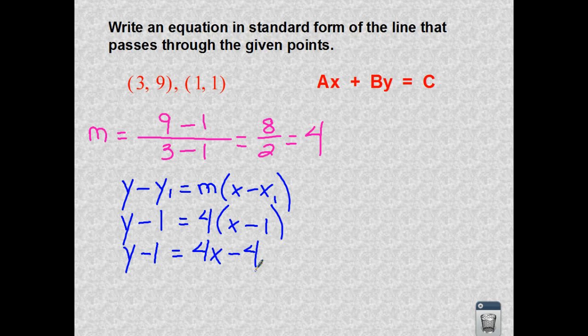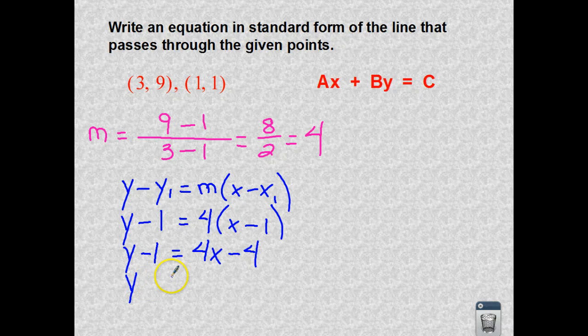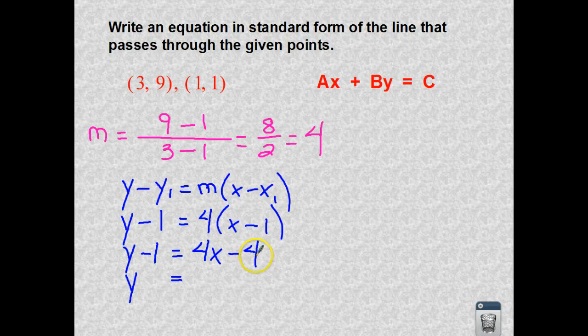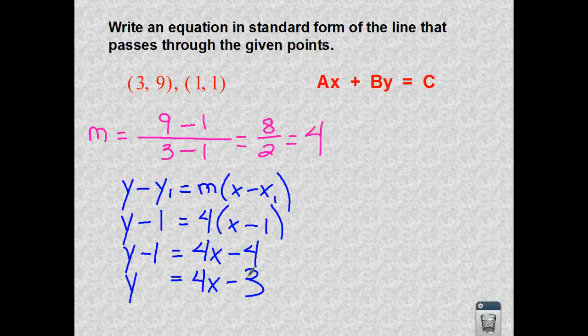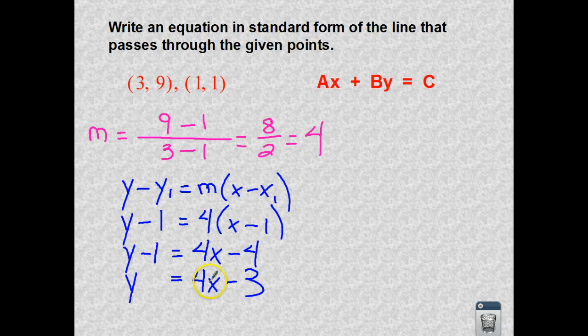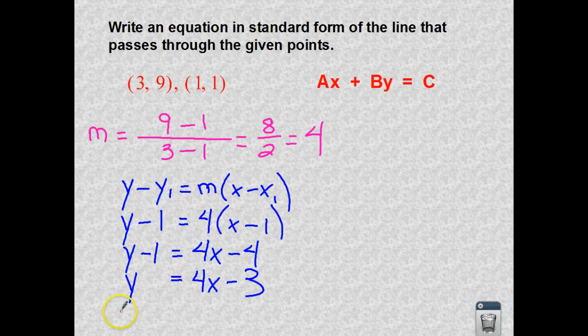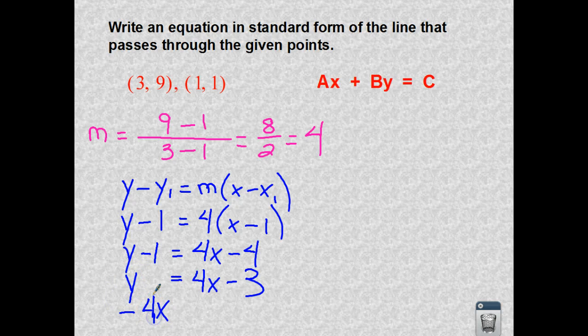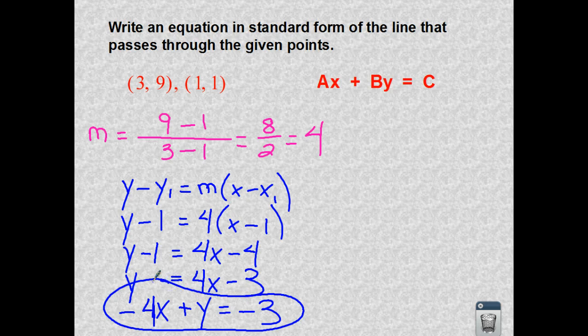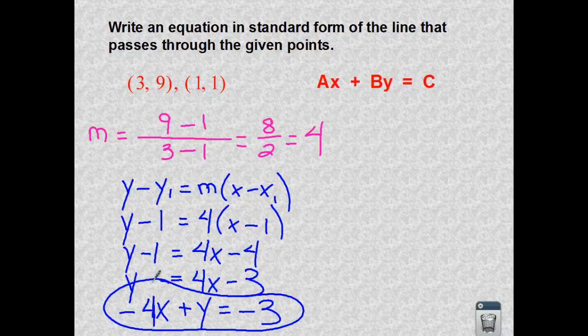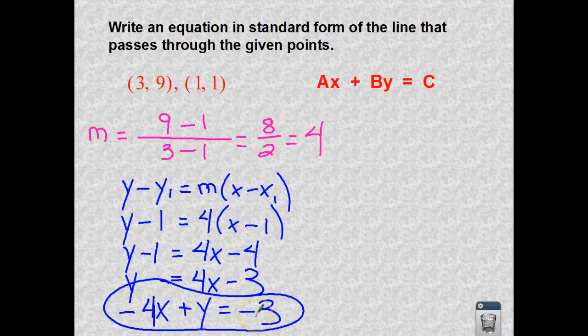Let's combine like terms. I take my negative one to the right, which makes it a positive one. So negative four plus one is negative three. I am now in slope intercept form. Let's take that slope intercept form and rearrange it so that we are in standard form. So we're going to take our positive 4x, bring it to the left. It becomes negative 4x. Let's keep my y where it is, positive y, and keep my negative three. So we have an equation of the line in standard form. A is negative four, B is positive one, and C is negative three.